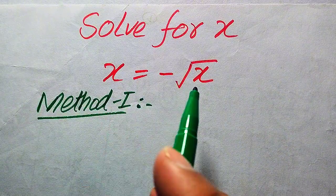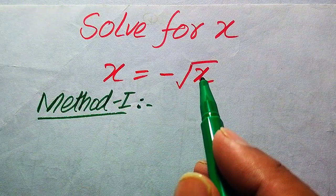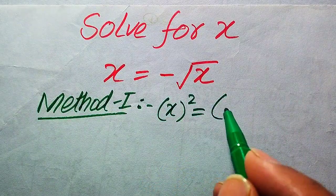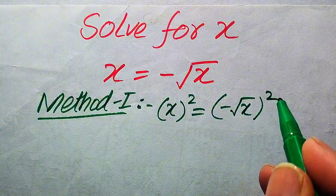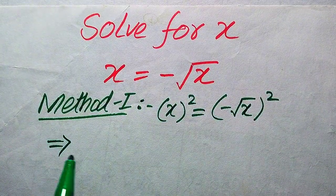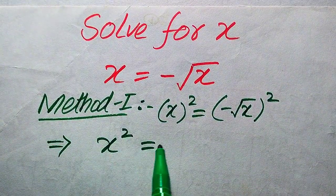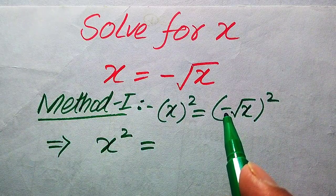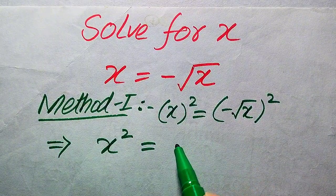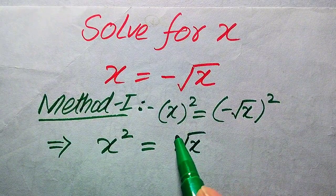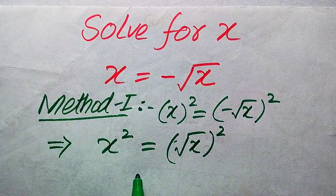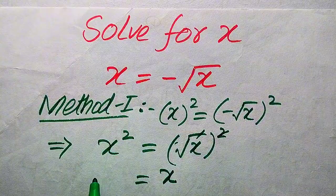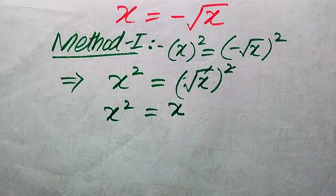In the first method, we need to remove the square root sign from the right hand side. For this we take squaring on both sides. When we square both sides, X squared equals — and we know that when we square a negative term it becomes positive — so the negative sign becomes positive. We apply the square on the square root term, and the square root cancels out, leaving X only.